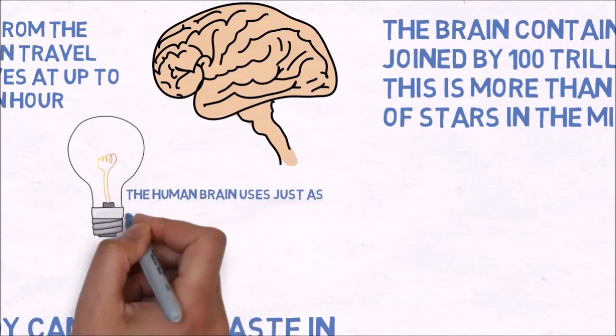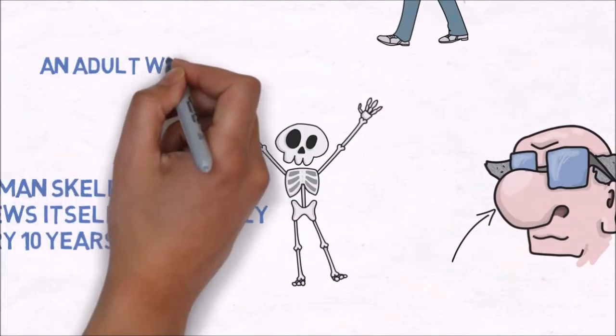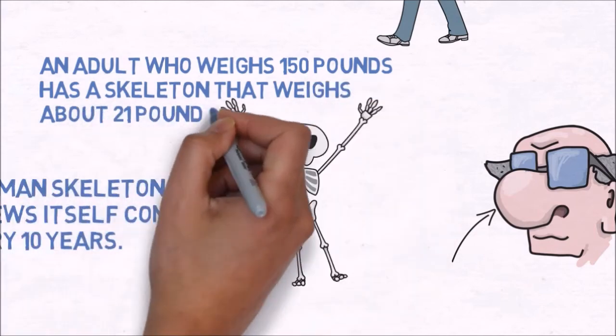The human brain uses just as much power as a 10 watt light bulb. An adult who weighs 150 pounds has a skeleton that weighs about 21 pounds.